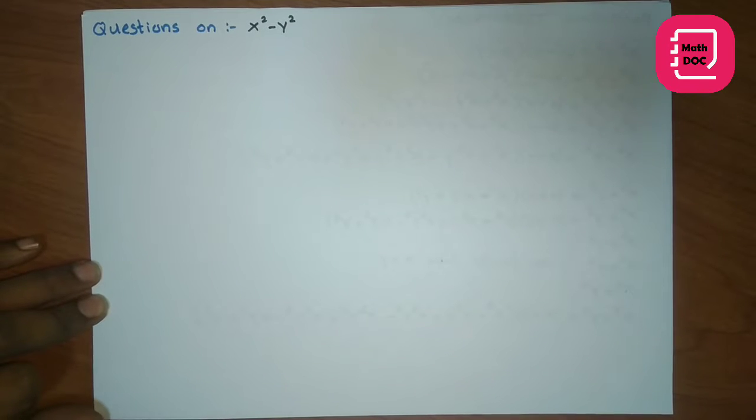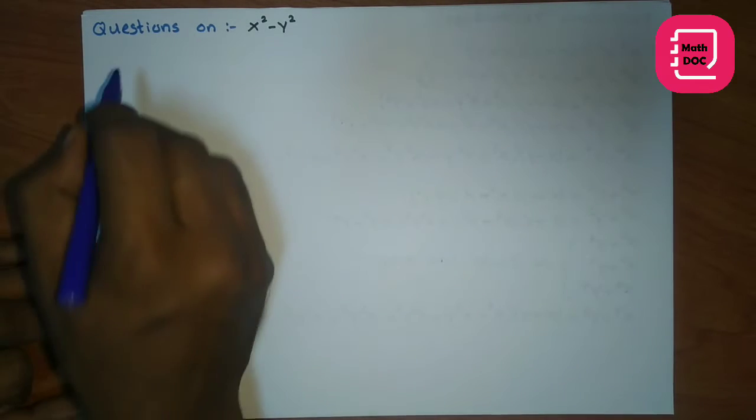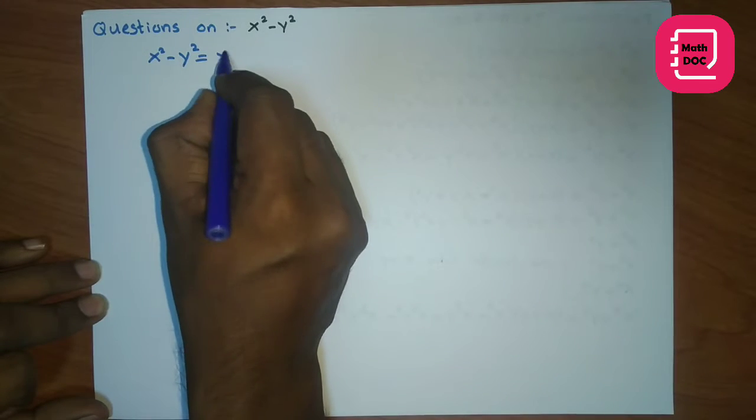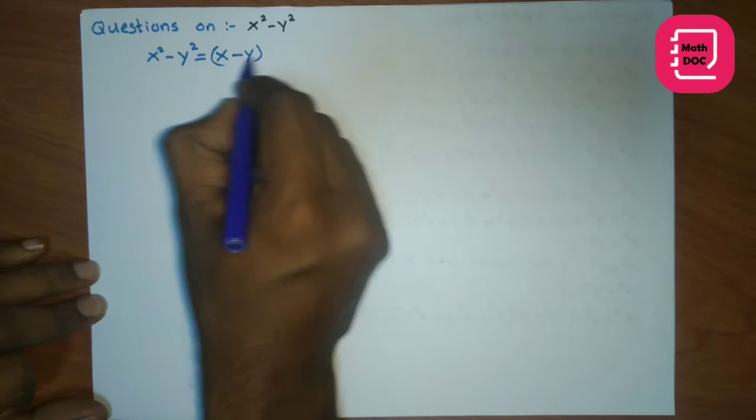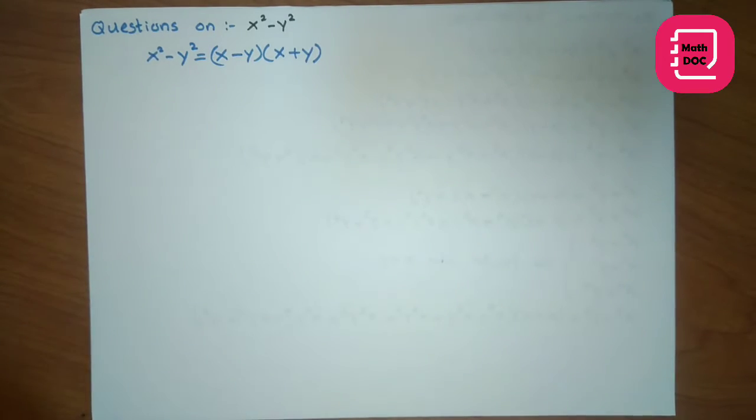Hi y'all, let's start factoring techniques x-squared minus y-squared. Here x-squared minus y-squared equals x minus y times x plus y. We call this difference of two squares.